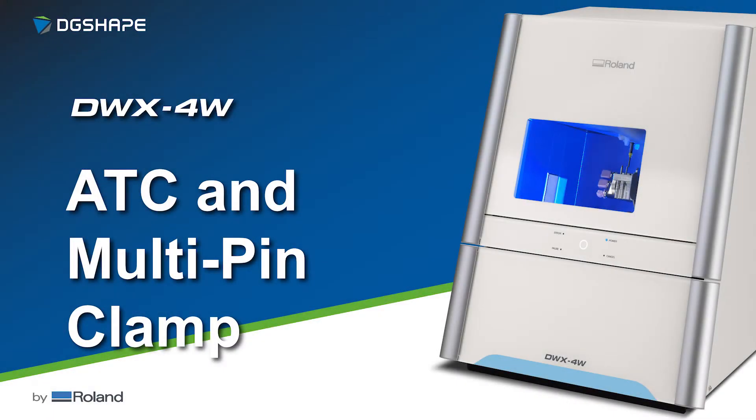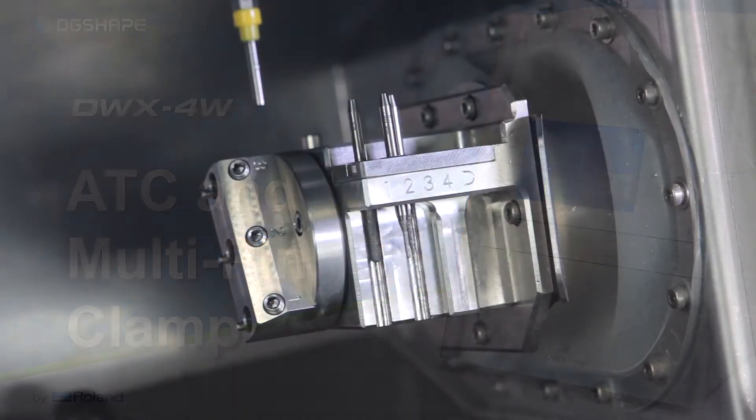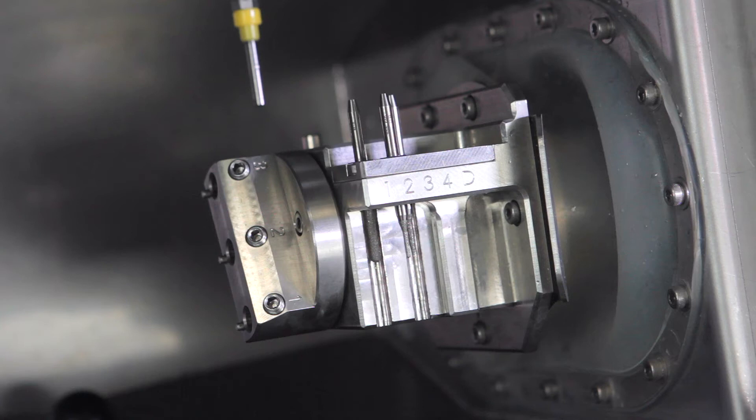The DWX-4W Dental Mill is equipped with a 4-slot automatic tool changer and a multi-pin clamp that allows up to 3-pin type materials to be loaded.